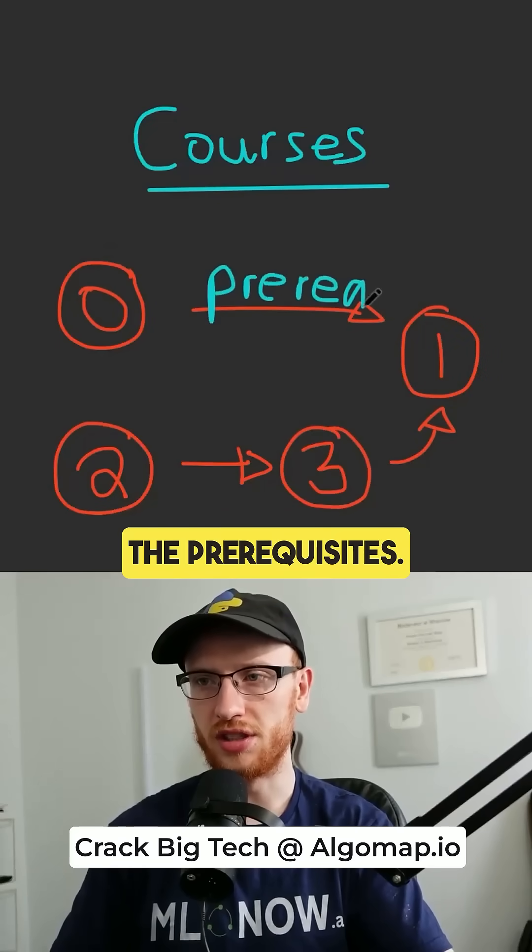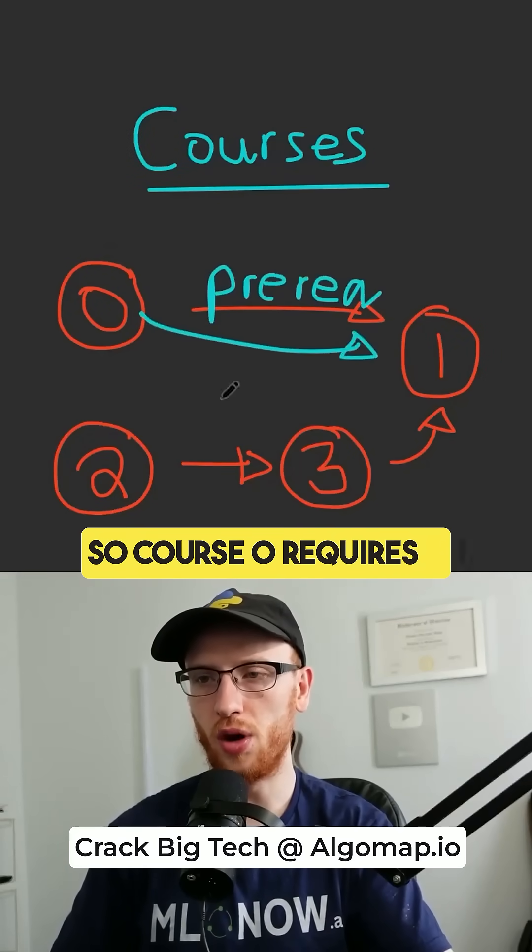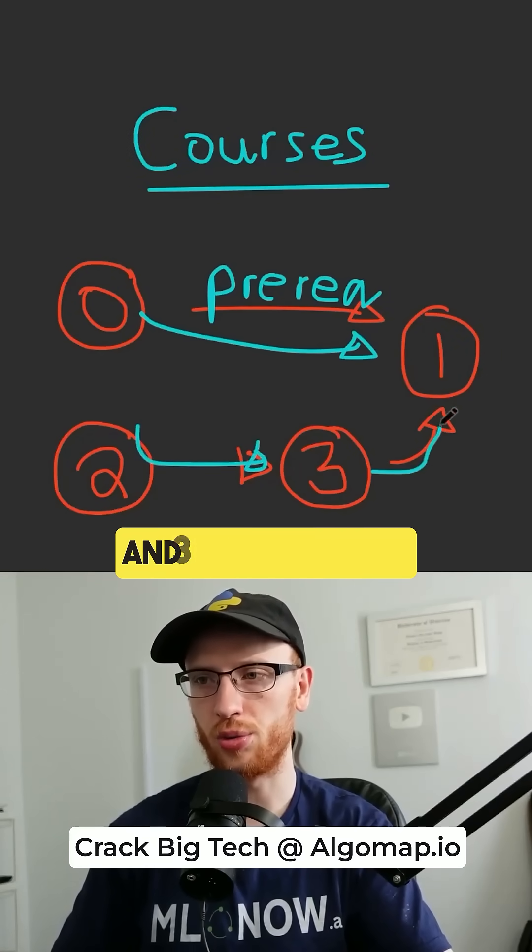Now our graph defines the prerequisites. So course 0 requires 1, 2 requires 3, and 3 also needs 1.